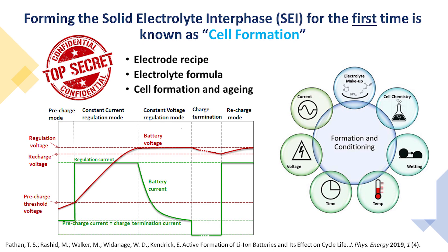Similar to electrode recipe and electrolyte formula, the formation procedure is also a great secret that battery manufacturers keep to themselves. Cell formation depends on all parameters such as wettability of the electrodes, electrolyte recipe, cell chemistry, temperature, and applied current density.